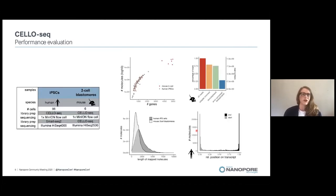In order to evaluate the performance of CELO-SEEK, we produced libraries of 96 cells of human IPS and sequenced them on a Minion flow cell and reproduced six cells of a two-cell mouse blastomere and also sequenced them by CELO-SEEK. We sequenced those on a Minion flow cell to generate long read sequencing data, but also produced short read sequencing data to look at the differences between short and long read sequencing.